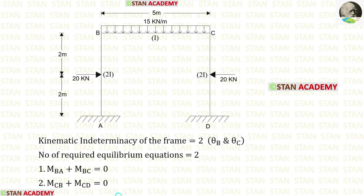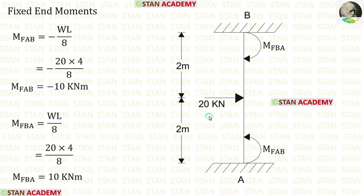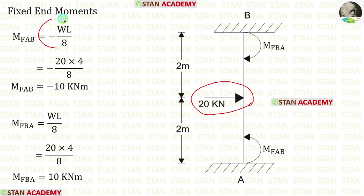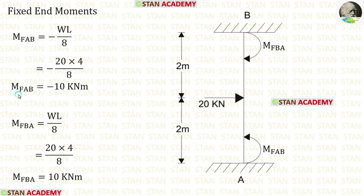Now let us calculate the fixed end moments. In column AB there is a point load of 20 kilo Newtons acting at the center. The formulas for fixed end moments are minus WL over 8 and plus WL over 8. Using these formulas we can find the fixed end moments M_AB and M_BA.